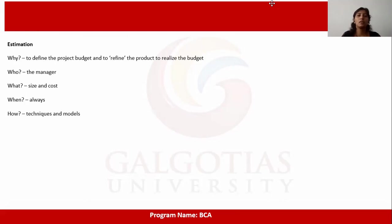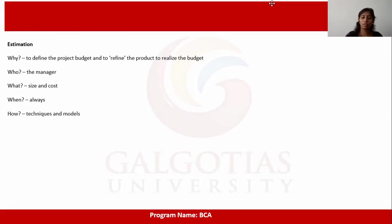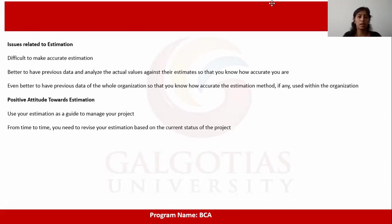Why do we need estimation? To define the project budget and to realize the budget. The manager is responsible for determining the size and cost, and this must be done continuously until the project concludes. Estimation is difficult — it is better to have previous data and analyze actual values against estimates. Even better is to have previous data from the whole organization so you know how accurate the estimation method used within the organization is.